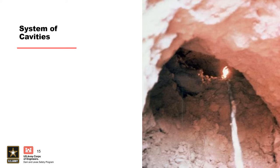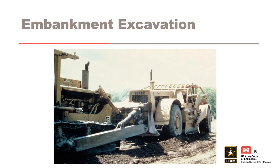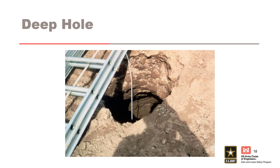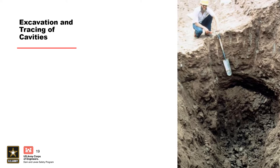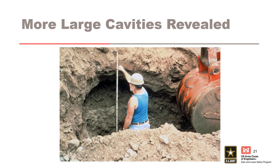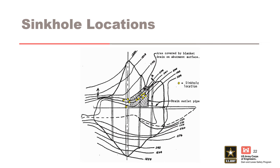The excavation revealed a large system of cavities. Some of the cavities were horizontal. Heavy equipment was brought in to enlarge the excavation to find the extent of the problem. Numerous cavities were found; this hole was 28 feet deep and up to 6 feet in diameter. The cavities were carefully excavated and traced to study the source of the problem, with some up to 10 feet in diameter. Most of the cavities originated above the steep shale left abutment. As the excavation progressed, more and more large cavities were revealed. The yellow dots in the figure show the sinkhole locations, which appear to be associated with the blanket drain near the left abutment and the steep rock slope.